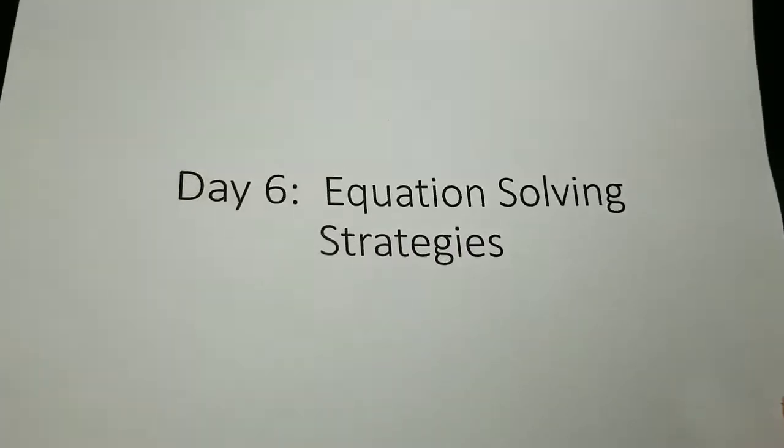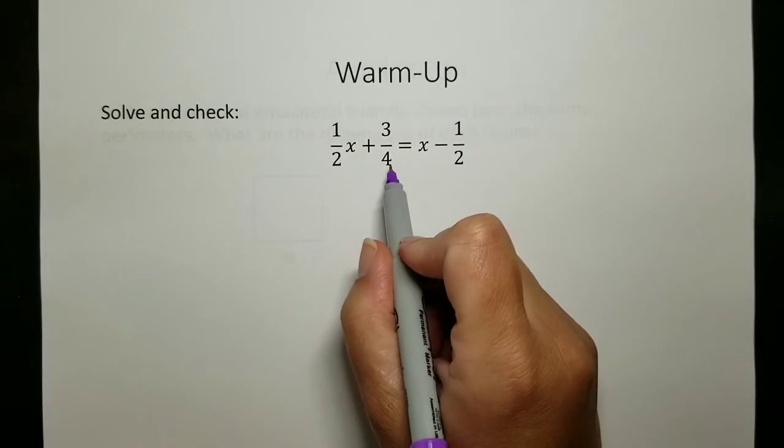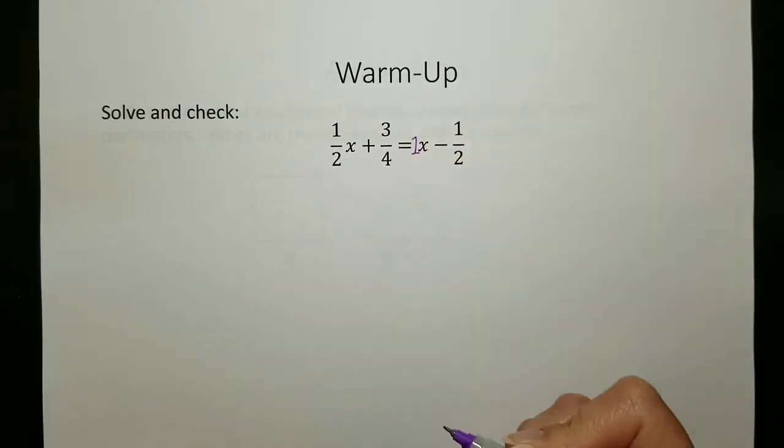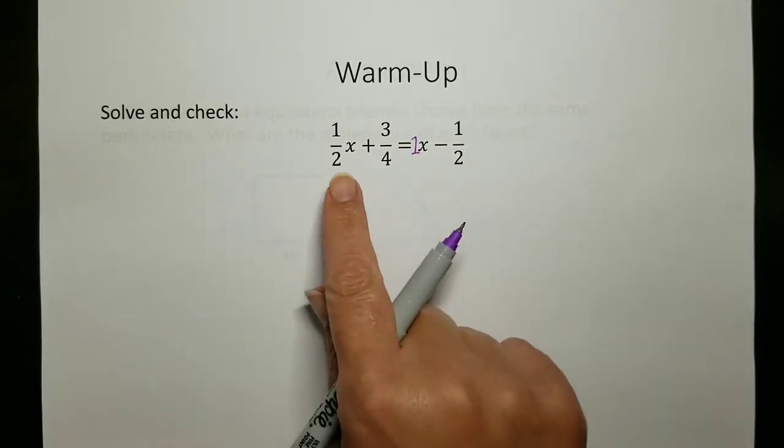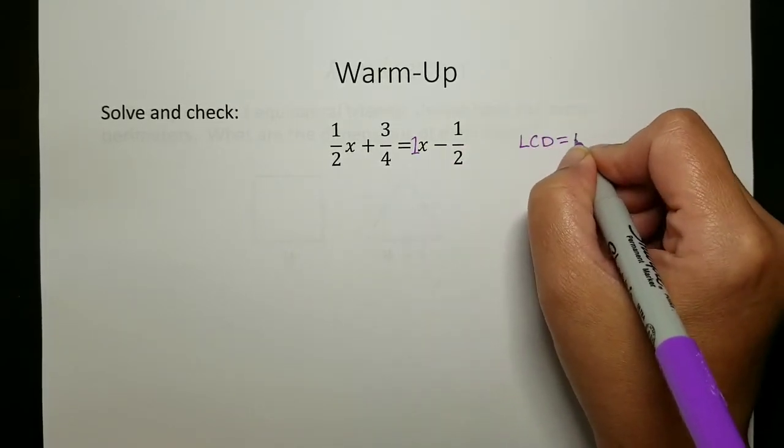I'm going to go through a couple examples. The first one is just a warm-up. We really want to practice and be sure that we're comfortable with solving equations involving fractions. So I'm going to look at this equation: one half x plus three quarters equals x minus one half. Looking at my denominators, I know that my lowest common denominator is four.